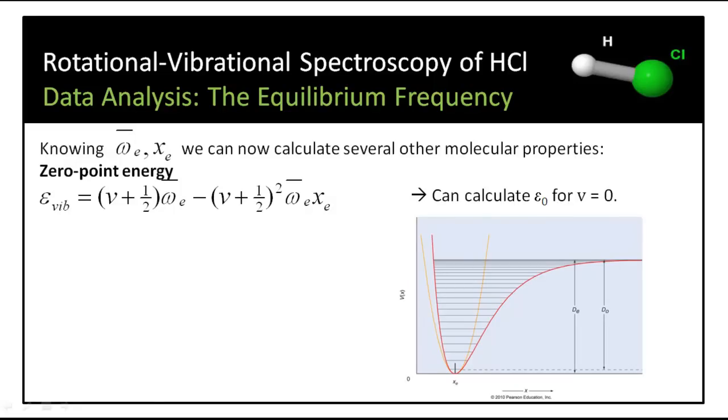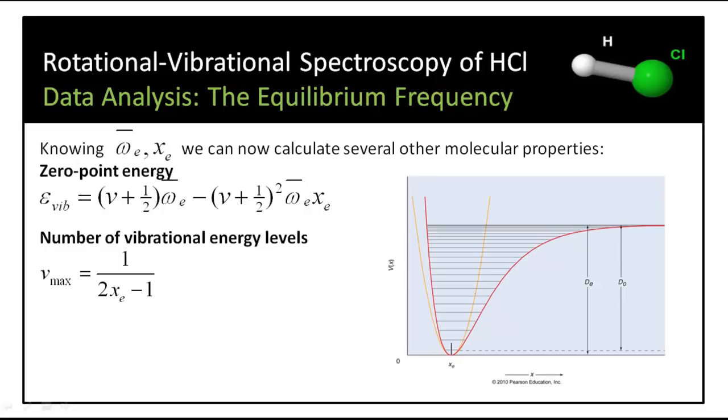For example, the zero point energy. Using this equation, we just substitute V equals zero into our expression. We can calculate the number of vibrational levels. Remember before we said they are a finite number. Knowing the anharmonicity constant, we can calculate the maximum number of vibrational levels. You should be able to see from this expression how this number depends on the magnitude of the anharmonicity constant. And we can also calculate the dissociation energy of HCl.